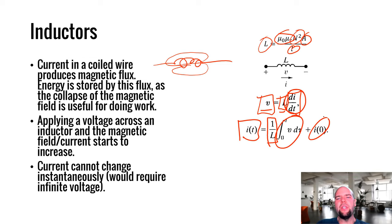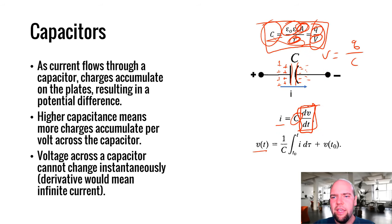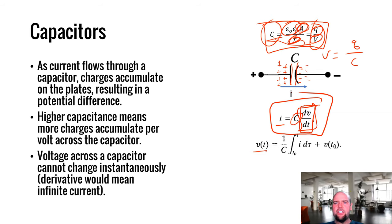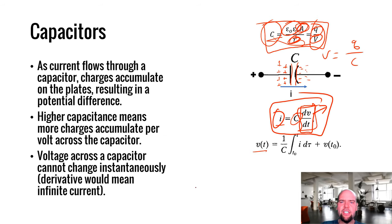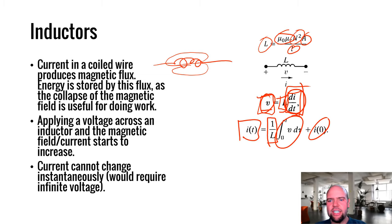An important note: is it possible for the voltage across a capacitor to change instantaneously? No — an instantaneous change in voltage would require an infinite derivative, which would require an infinite current. So the voltage across a capacitor cannot change instantaneously. Similarly, with an inductor, unless you have an infinite voltage, the current cannot change instantaneously. The current through an inductor cannot change instantaneously, and the voltage across a capacitor cannot change instantaneously.